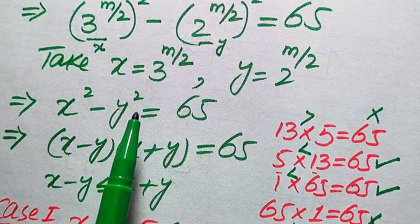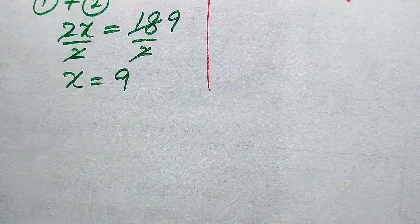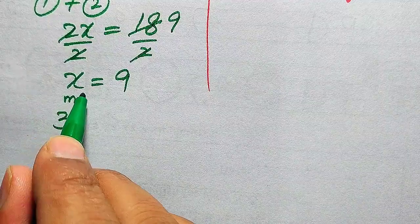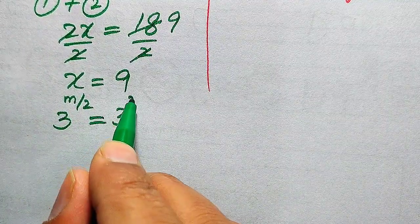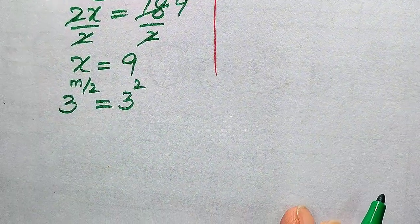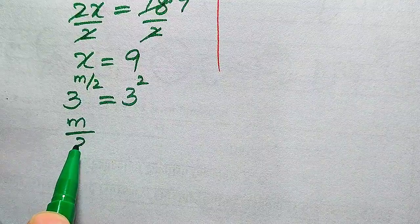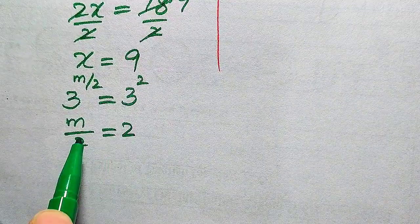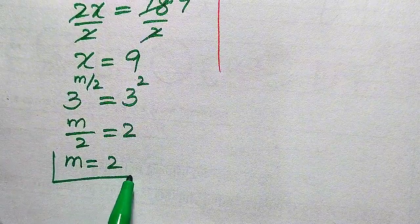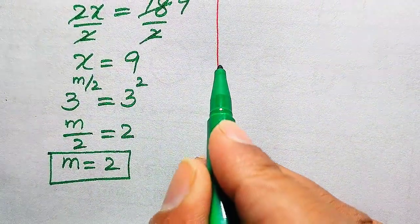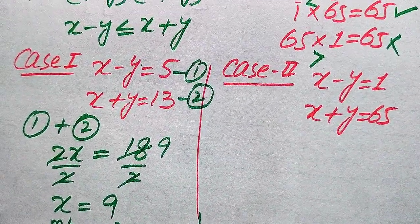Moving backward, we recall that x equals 3 to the power of m over 2. Back-substituting, we get 3 to the power of m over 2 equals 9, and we write 9 as 3 squared. Since the bases are the same, we equate exponents: m over 2 equals 2, giving us m equals 4. This is the first root.